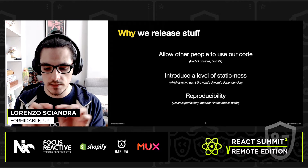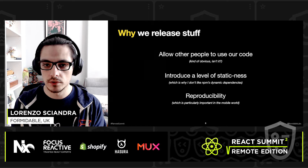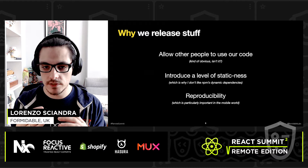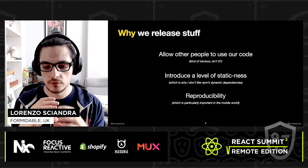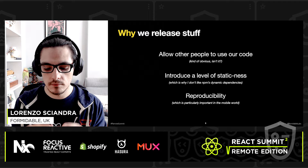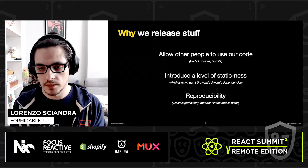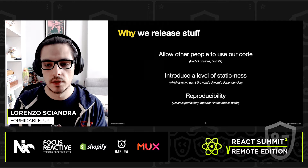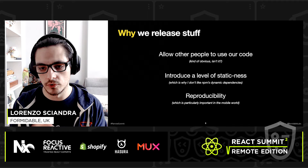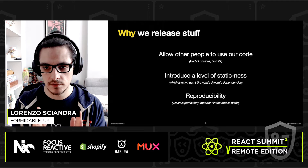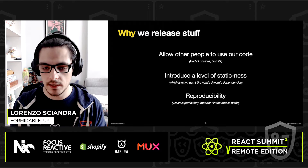We do releases and versioning because we want to introduce a level of staticness — to say: this is a version of the code, a package I've decided is good enough to be given out as a unit. That's also one reason why I don't really like dynamic dependencies or using the caret for some dependencies — I prefer strict staticness.